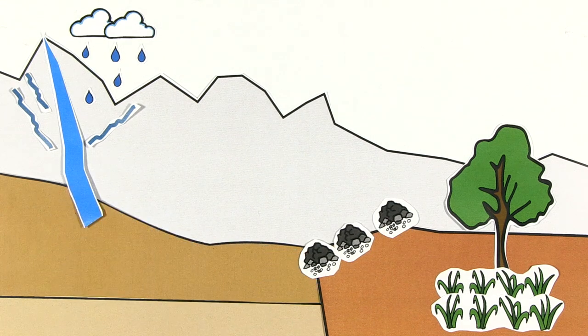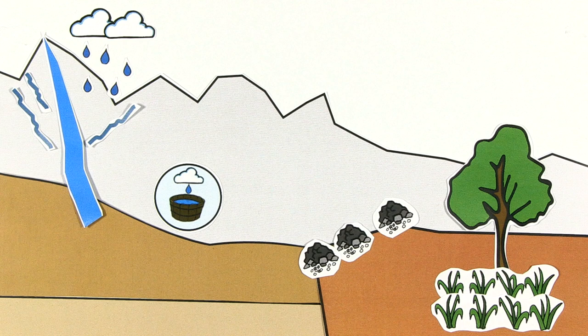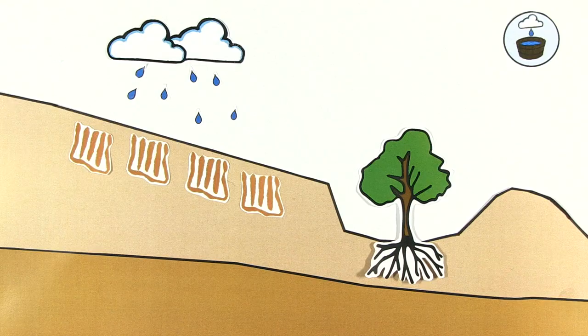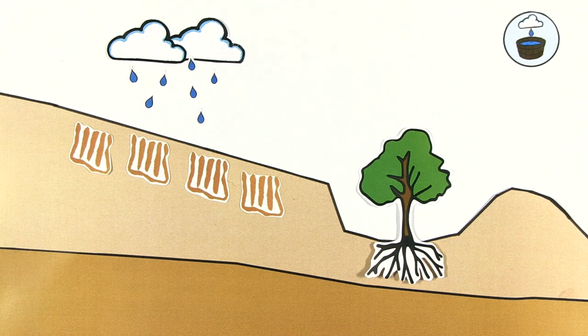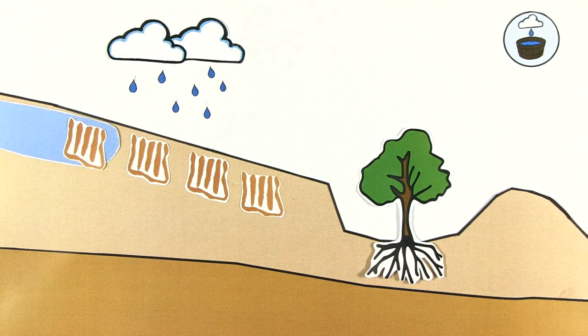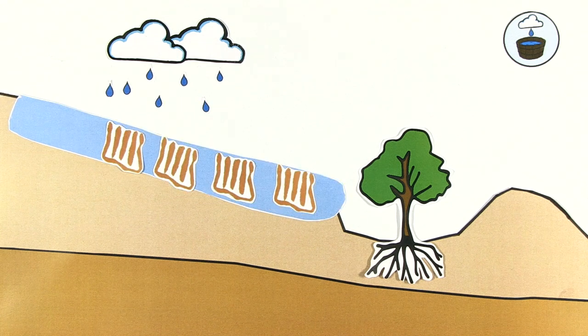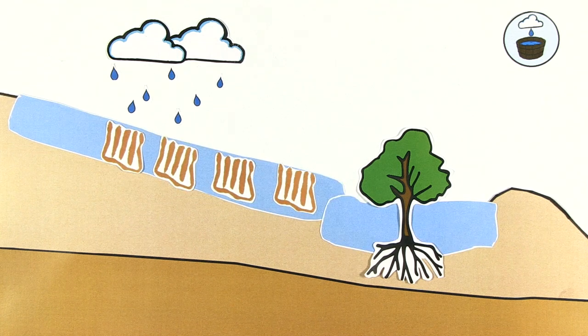These techniques are categorized into microcatchment and macrocatchment harvesting systems. Microcatchment systems collect surface runoff over a short distance in a small catchment area. On-farm systems collect rainfall right where it falls and ensure that crops use the water effectively.